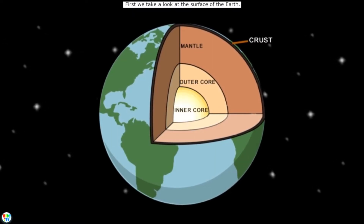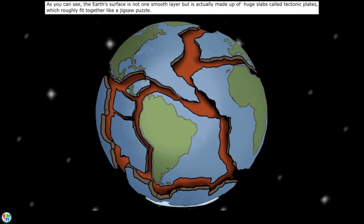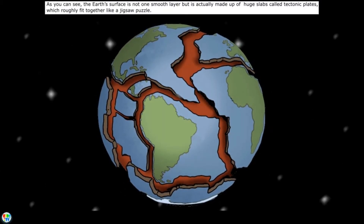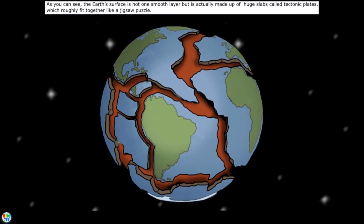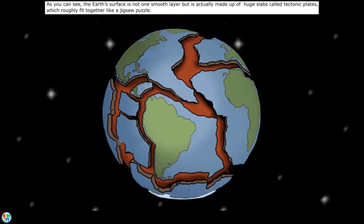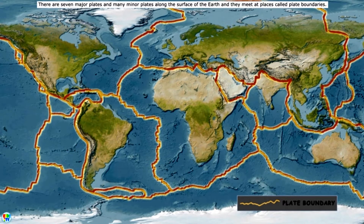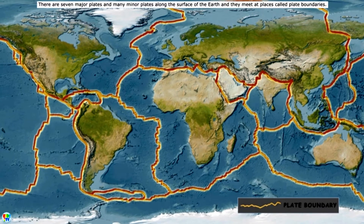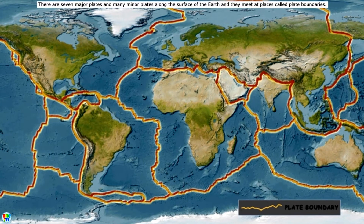First we take a look at the surface of the earth. As you can see, the earth's surface is not one smooth layer, but is actually made up of huge slabs called tectonic plates, which roughly fit together like a jigsaw puzzle. There are seven major plates and many minor plates along the surface of the earth, and they meet at places called plate boundaries.